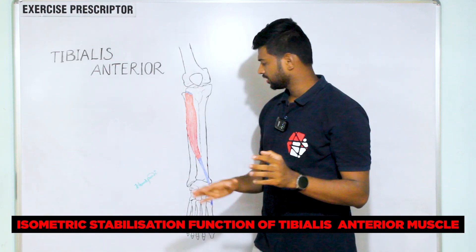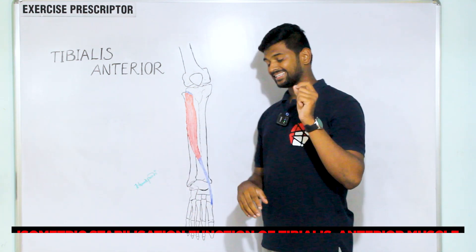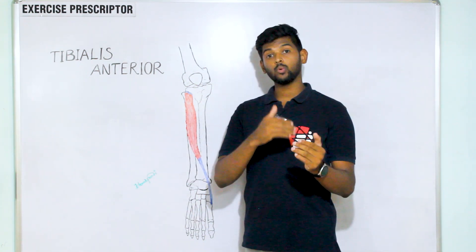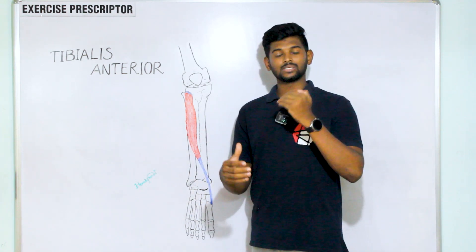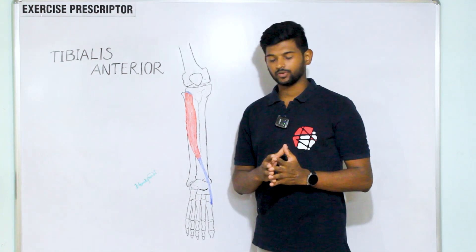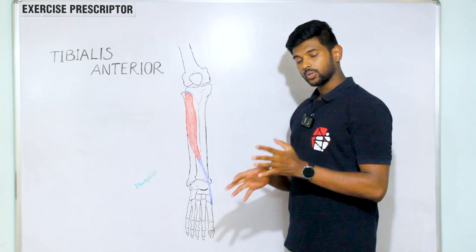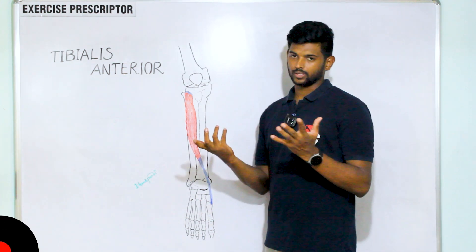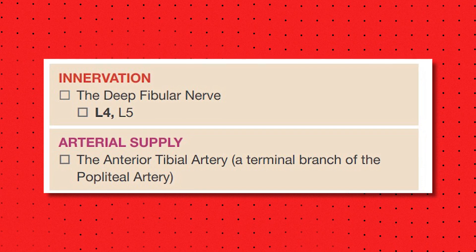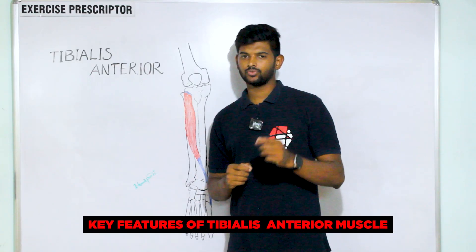Isometric stabilization function of tibialis anterior: it stabilizes the ankle and subtalar joint and also plays an important role to support and stabilize the arch of the feet by pulling the first cuneiform and metatarsal bone superiorly.